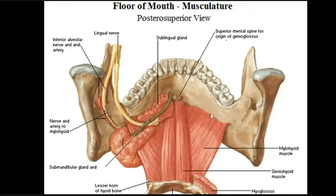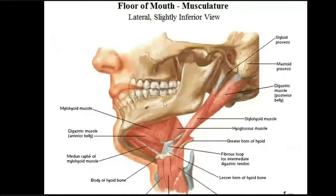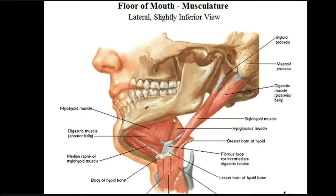So these two muscles — mylohyoid and geniohyoid — form the floor of the oral cavity. Anything above here constitutes the contents of the oral cavity, and through the posterior free border of mylohyoid pass structures from outside the oral cavity to inside. Here is the deep portion of the submandibular salivary gland curving over the mylohyoid to enter inside the oral cavity. Looking at this slide from the side, you can see the mylohyoid muscle, the median raphe, the posterior free border, and the hyoid bone.